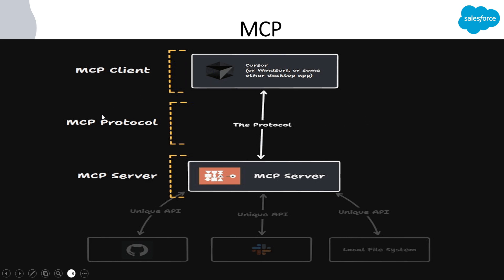So to summarize the terminology: MCP is a protocol. It has different components — the MCP host, MCP client, MCP server, and the MCP protocol itself. Let's now see one example; I'm going to show you this in VS Code.